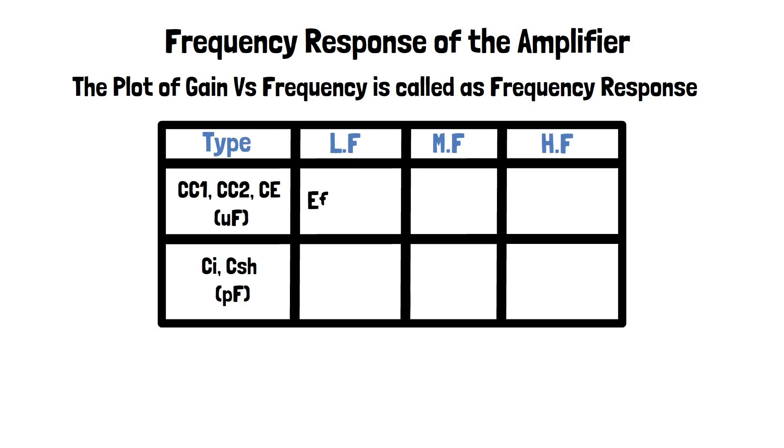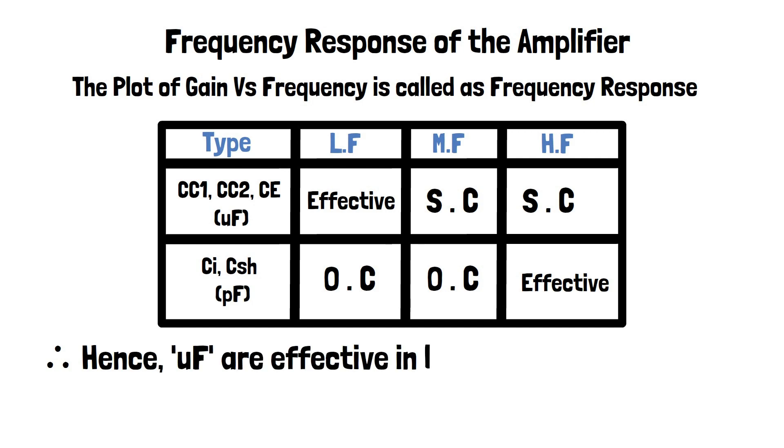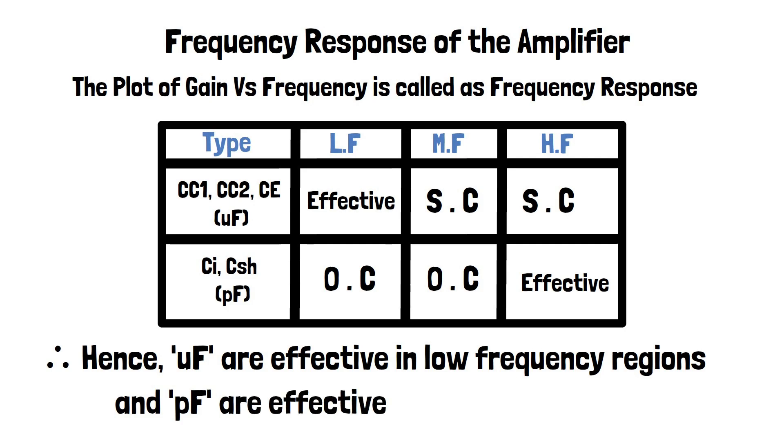The capacitors CC1, CC2 and CE are all microfarad capacitors, and these capacitors function effectively in low frequency regions. At mid and high frequencies they act as short circuits. The capacitors CI and CSH are picofarad capacitors, and these capacitors function effectively in high frequency regions. At low and mid frequency regions they act as open circuit. Hence microfarad capacitors are effective in low frequency regions and picofarad capacitors are effective in high frequency regions.